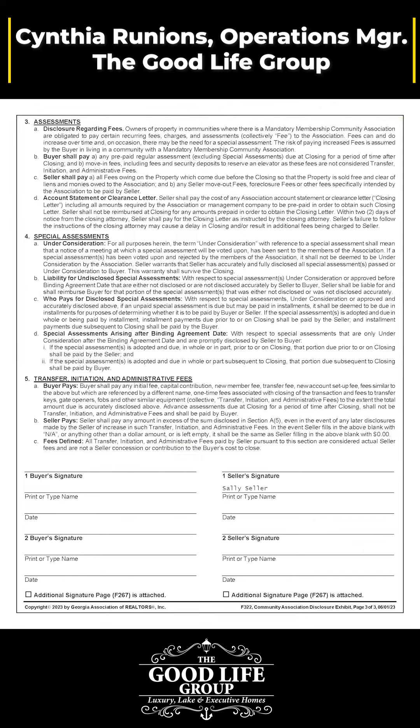Then on the right side of the signature section, sign in the spaces provided. A lot of sellers accidentally sign in the buyer section and have to redo the form. You'll find that HOAs provide the data to homeowners for the forms a lot, so they should know what to include. Once it's filled out and signed, it's not a bad idea to send it to the person who provided the data and check it for accuracy.